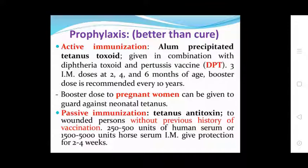Prophylaxis: active immunization is better than treatment. Alum-preserved tetanus toxoid is given in combination with diphtheria toxoid and pertussis vaccine (DPT). Three IM doses at two, four, and six months, with a booster dose every 10 years, are recommended. Booster doses can be given to pregnant women to protect against neonatal tetanus.